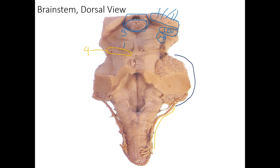Now, we removed the cerebellum, and the cerebellum — just like the cerebrum has a peduncle — has peduncles as well. In fact, the cerebellum has three pairs of peduncles: it has a superior cerebellar peduncle, a middle cerebellar peduncle, and an inferior cerebellar peduncle, which I've outlined here. When we get to the cerebellar lecture, we'll learn that these all have different fibers going through them and different functions.